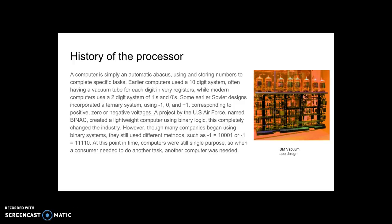To start, a quick history of the processor. A computer is simply an automatic abacus, using and storing numbers to complete specific tasks. Earlier computers used a 10-digit system, often having a vacuum tube for each digit in every register, while modern computers use a 2-digit system of 1s and 0s — the binary code.